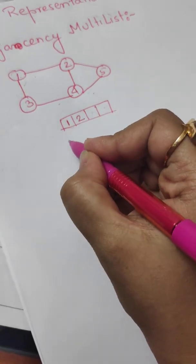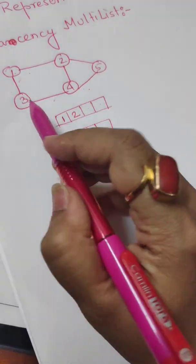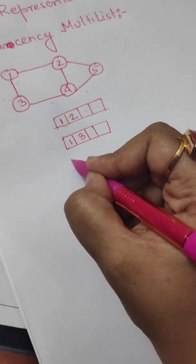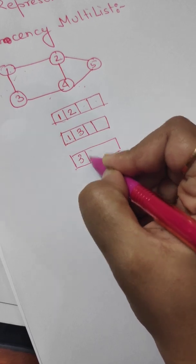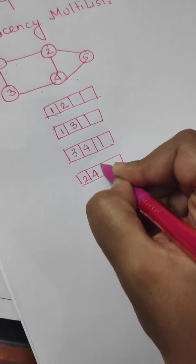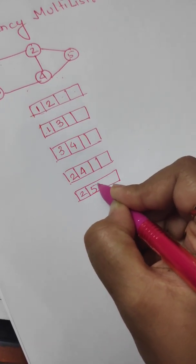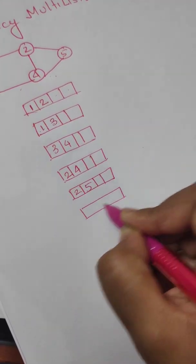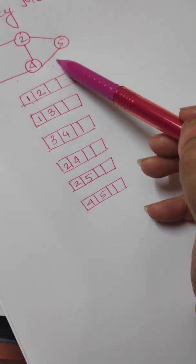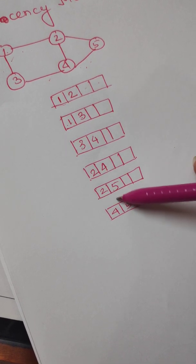Let us represent this particular edge. Again, since it is an undirected graph, we could have written this as three-one as well. So you see there are six edges in the graph, and we have represented each edge of the graph here.